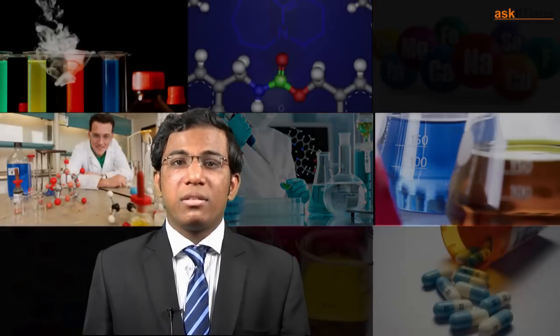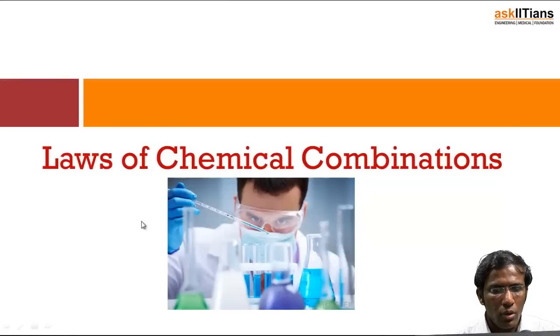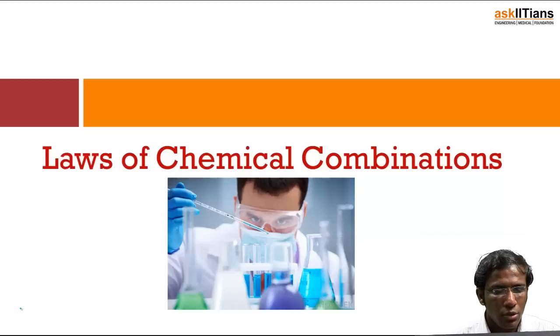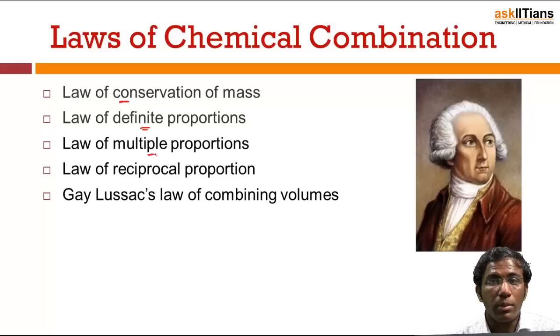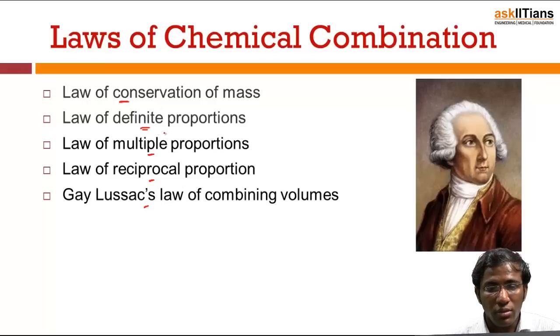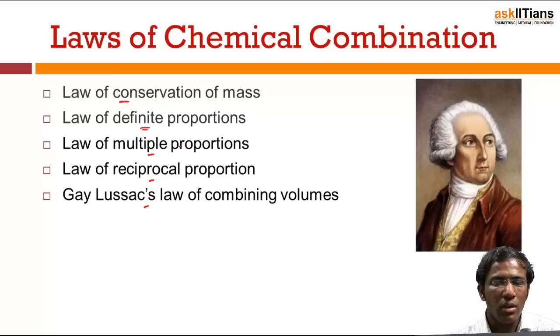Hello students, now it's time to learn about the five important laws that allow us to understand the way in which chemical species react in chemical reactions. Let's understand the laws of chemical combination. We have five laws: law of conservation of mass, law of definite proportions, law of multiple proportions, law of reciprocal proportions, and Gay-Lussac's law of combining volumes. In this part I will discuss the first three laws, and the last two in the next part.